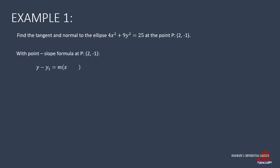Knowing m = 8/9 and the point (2, -1), we use the point-slope formula to find the equation of the tangent line. By substituting x1, y1, and m in the formula, we arrive at 9(y + 1) = 8(x - 2). Distributing coefficients and collecting like terms gives 8x - 9y = 25. This is the tangent line.